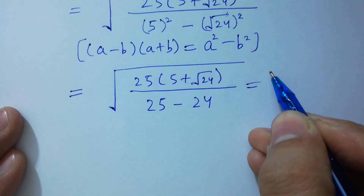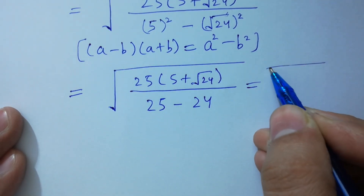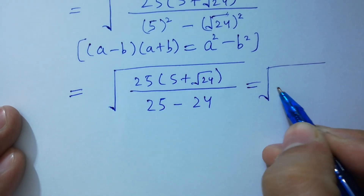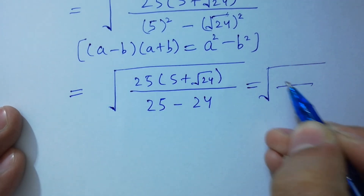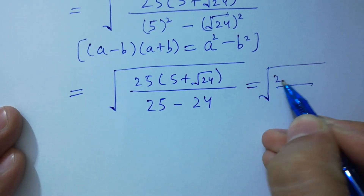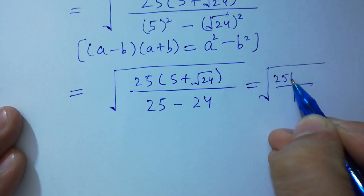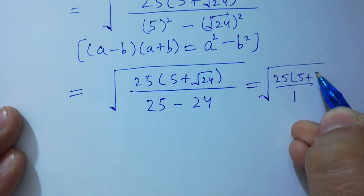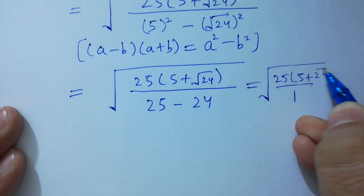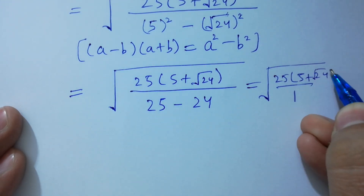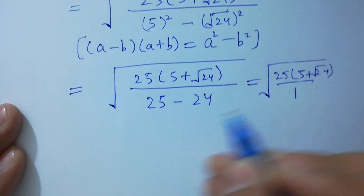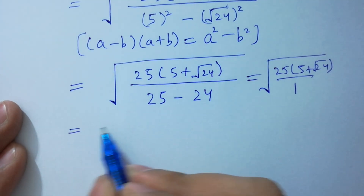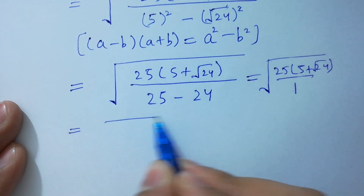So we have square root of 25 times (5 plus square root of 24) over 5 squared minus 24, and 25 minus 24 is equal to 1. The denominator becomes 1, leaving square root of 25 times (5 plus square root of 24) as it is.